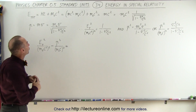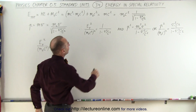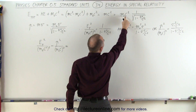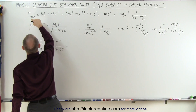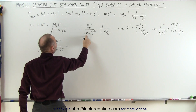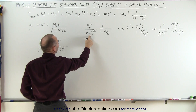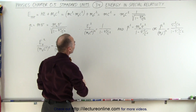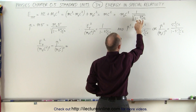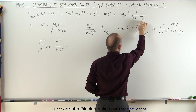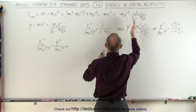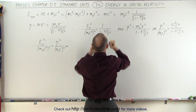Next, we take E-total equal to this quantity. We take m-sub-naught c squared and move it below E-total. So we have E-total divided by m-sub-naught c squared, and then we square that quantity, which means on the right side we're left with 1 over the square root of 1 minus v squared over c squared. Since we're squaring both sides, we end up with that.